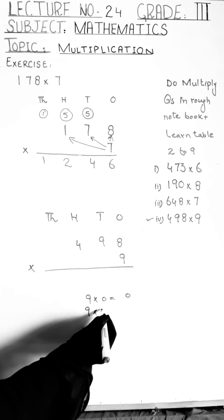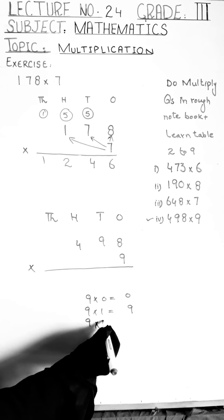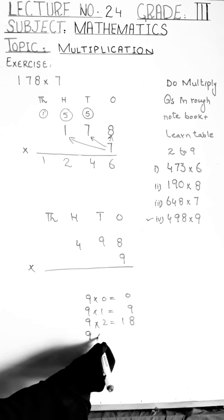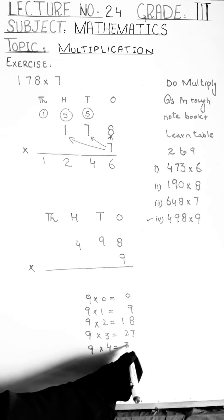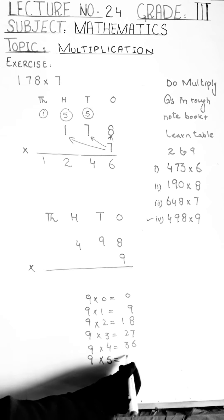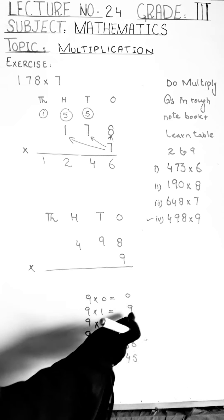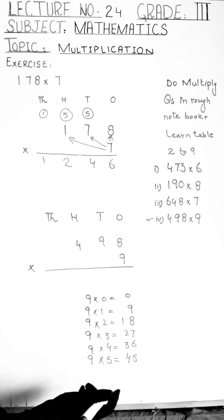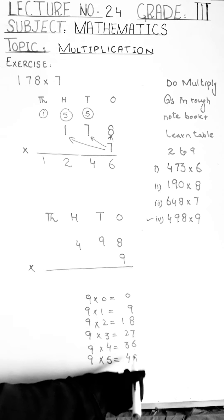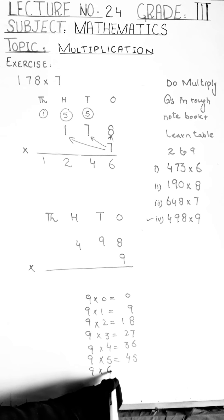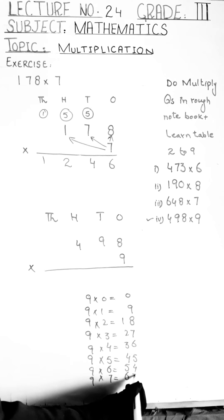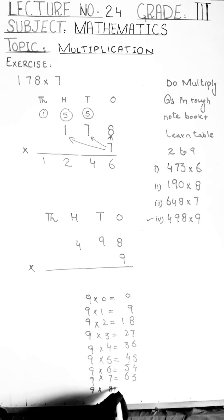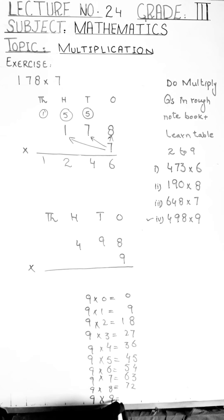Nine zero is zero. Nine ones are nine. Nine twos are eighteen. Nine threes are twenty-seven. Nine fours are thirty-six. Nine fives are forty-five. Look at this table — one side the numbers increase and the other side they descend. Nine sixes are fifty-four. Nine sevens are sixty-three. Nine eights are seventy-two. Nine nines are eighty-one.